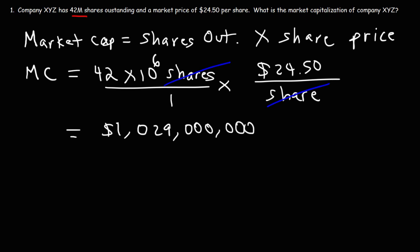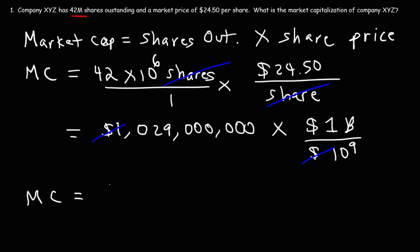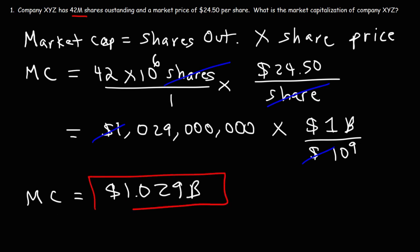This is a lot of zeros to write. If you want to simplify your answer, divide by 10 to the 9, since 1 billion is 10 to the ninth dollars. So you can write the market cap of company XYZ as 1.029 billion dollars, which is a lot easier to write.